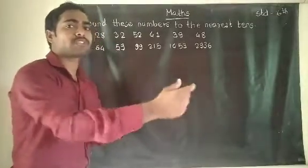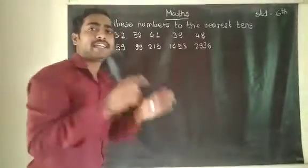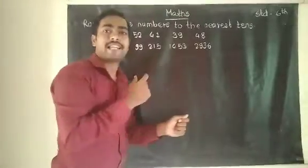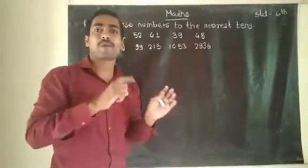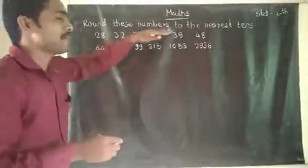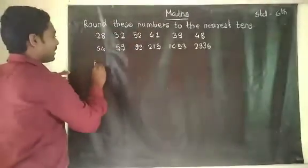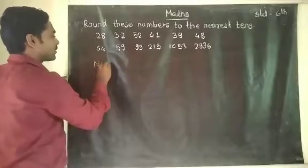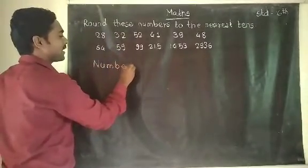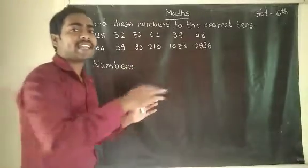Nearest tens is another name for rounded off tens. Nearest tens means rounded off tens. The number is given. We will solve this. On the left side we will write the given numbers, and on the right side we will write the nearest tens.